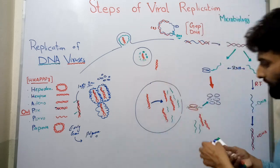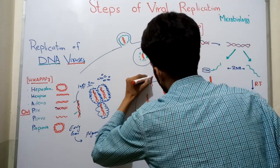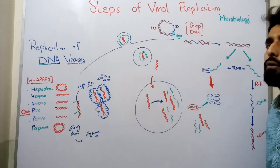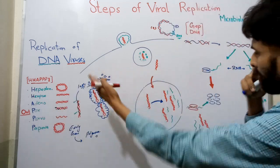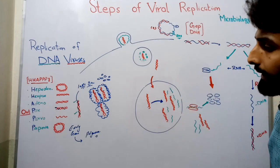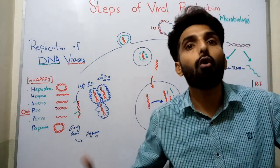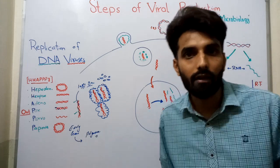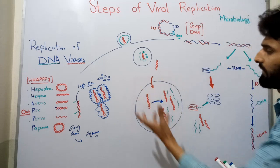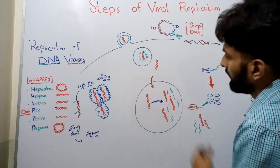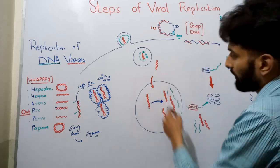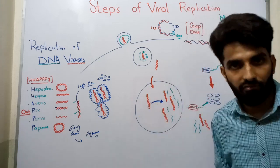The virus has come out of the endosome and now needs to get into the nucleus. Mostly DNA viruses replicate inside the nucleus; Pox virus is a few exceptions that replicate outside. When the virus enters the nucleus, it will use the host enzymes and host replicating machinery. DNA polymerase and RNA polymerase are present in the host nucleus, and the virus will use those enzymes for replication.